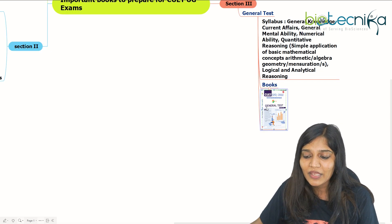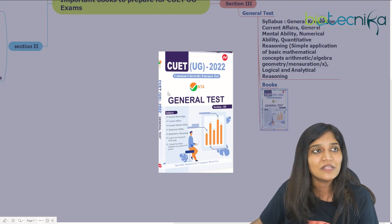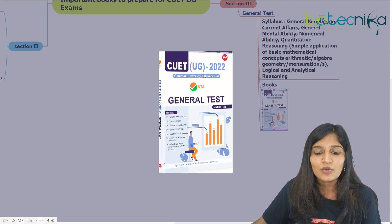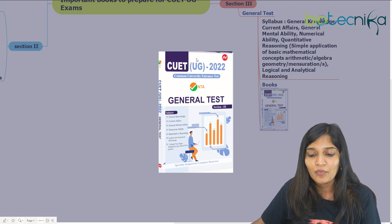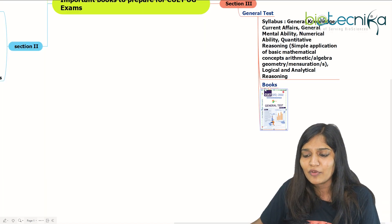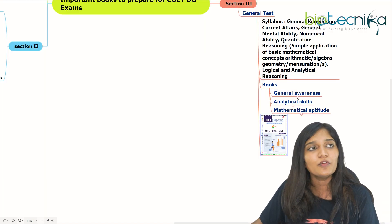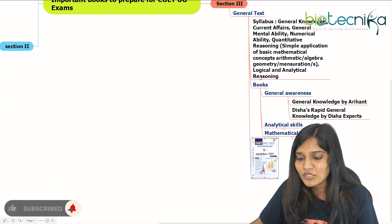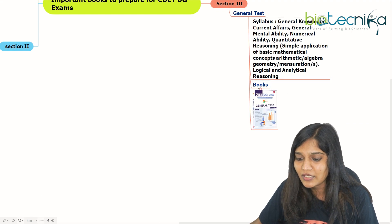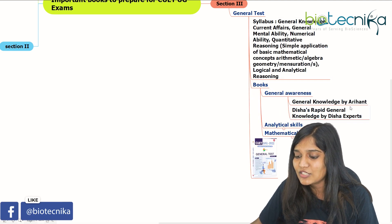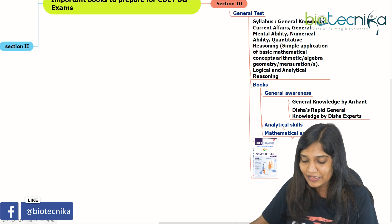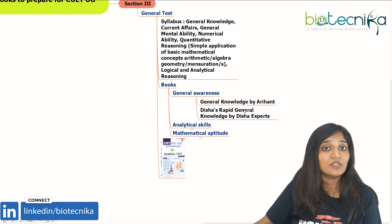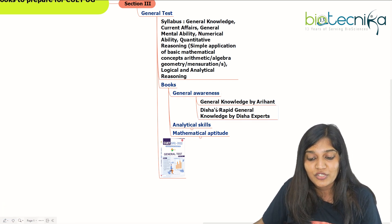I would suggest the NTA CUET-UG 2022 book very specifically for this general test — it is a very standard book where you will find all the aptitude questions. For general awareness, you can go for General Knowledge by Arihant, or Disha Rapid General Knowledge by Disha Experts, which is a very nice book for general awareness.